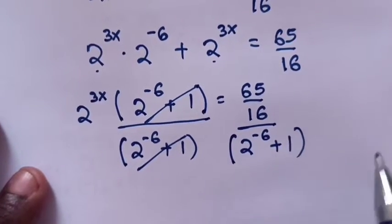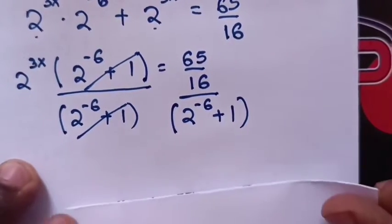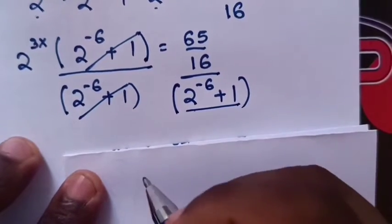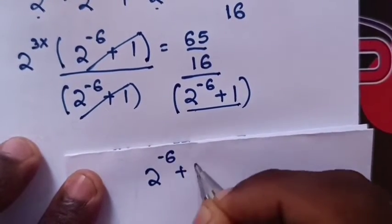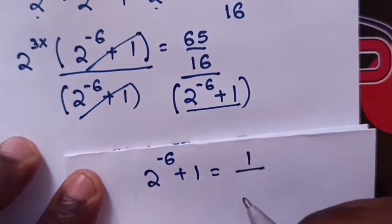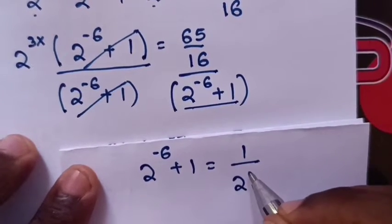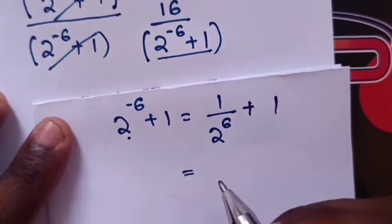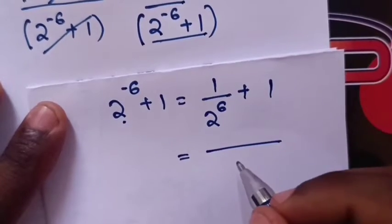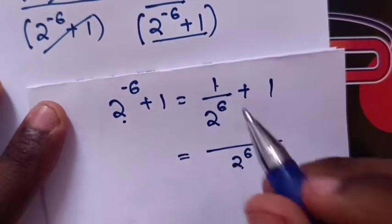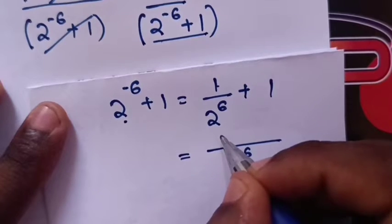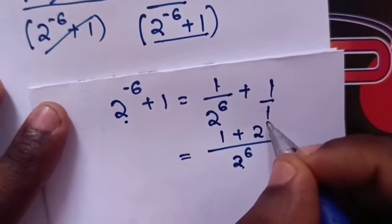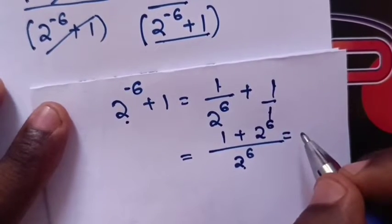From here, in the denominator, 2^(-6) + 1 is converted into a fraction: 2^(-6) + 1 = 1/2^6 + 1. The common denominator is 2^6, so this becomes (1 + 2^6) / 2^6.